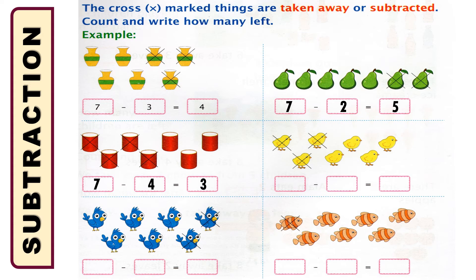In the right part, you can see there are some chicks — small baby chickens. There are seven baby chickens and among them three were cross-marked or taken away. So how many remain? Counting: one, two, three, four — four remain. So we can write seven subtraction three is equal to four.